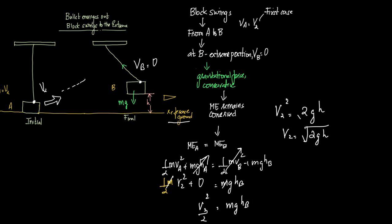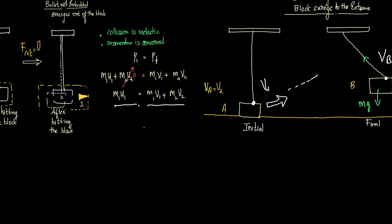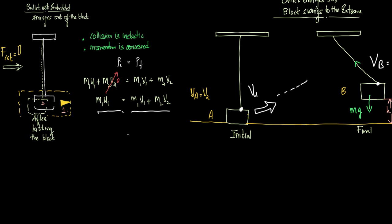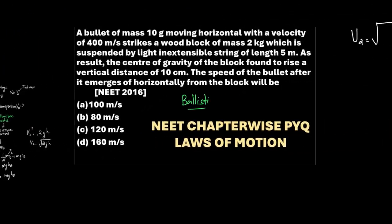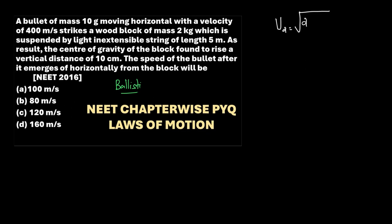So we have V2 = √(2gH). Combined with the first equation M1·U1 = M2·V2 + M1·V1, we now have two equations. Here, 1 represents the bullet and 2 represents the block.